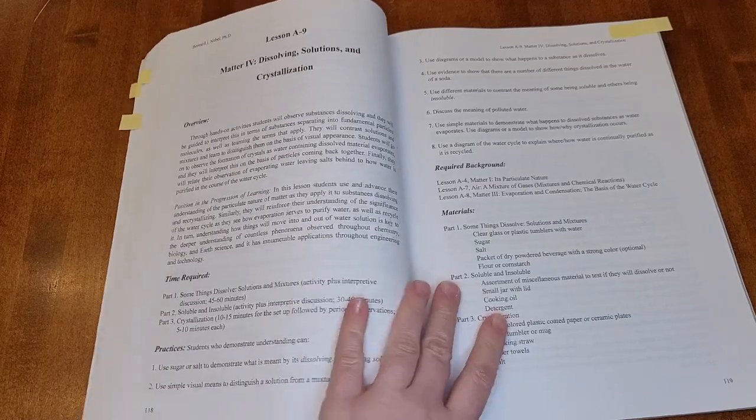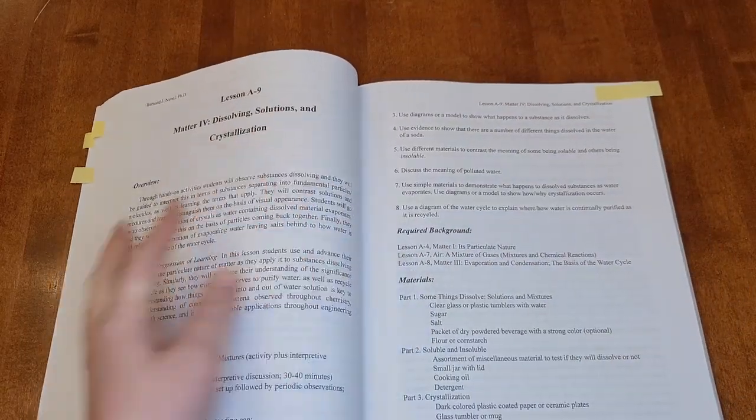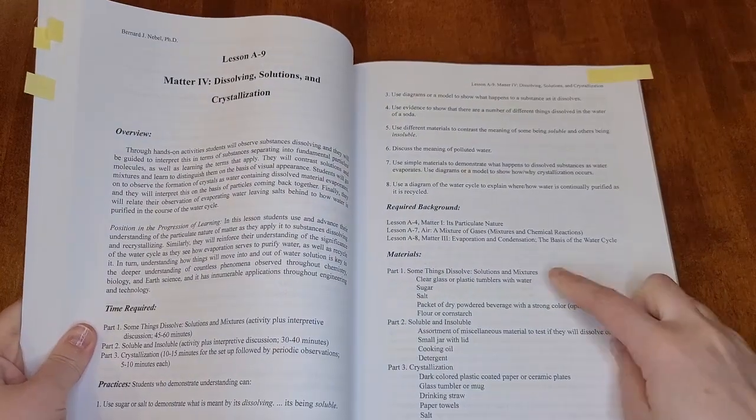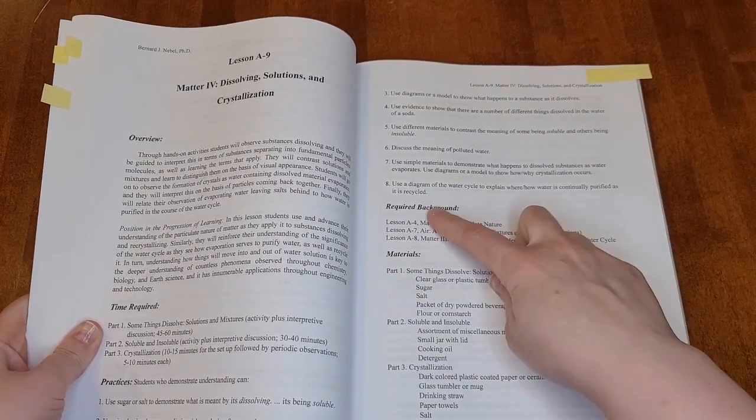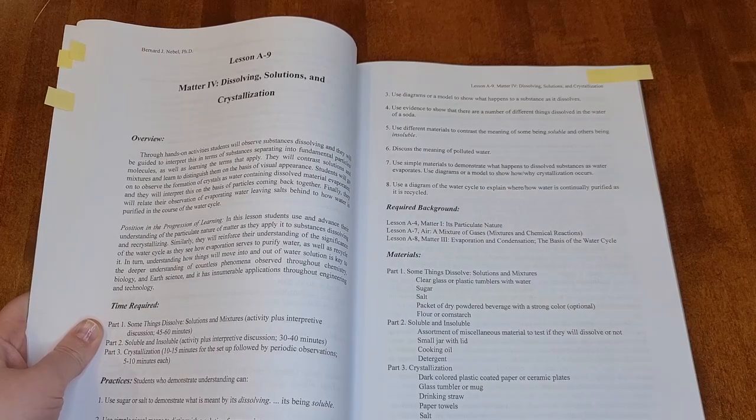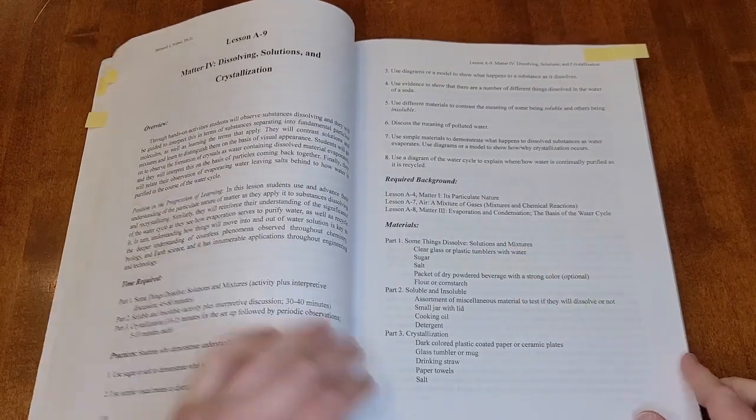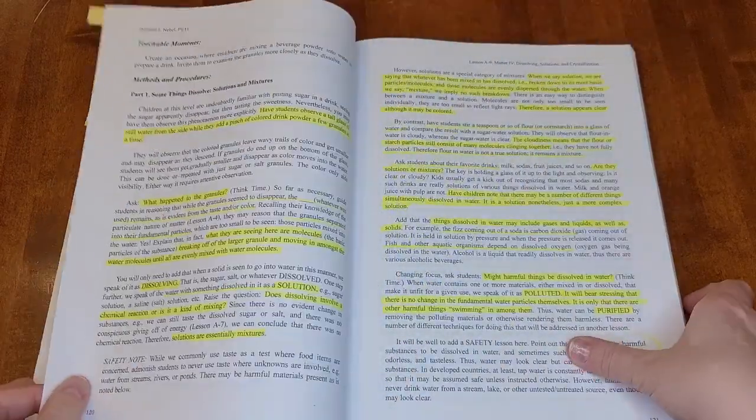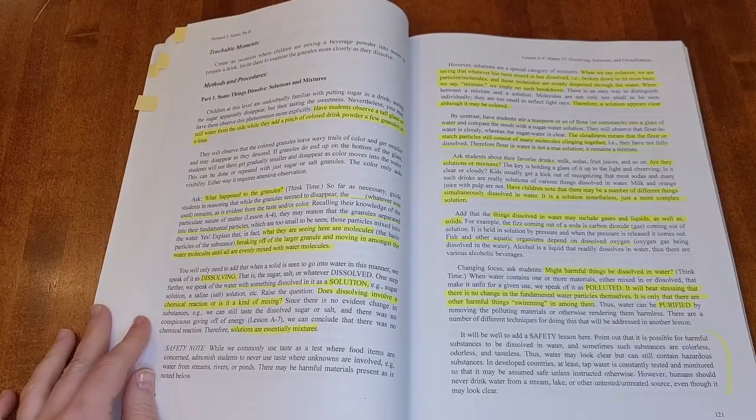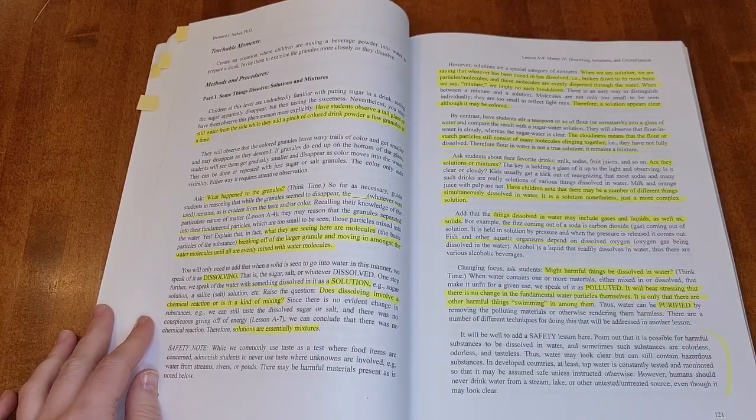Then it has practices, things that your student hopefully will be able to do when this lesson is over. The required background are the prerequisites. You have to have done these listed lessons first before you go to this lesson. Materials for the different things that you'll be doing in this lesson, the different demonstrations. This book mostly has demonstrations at this age as opposed to experiments.